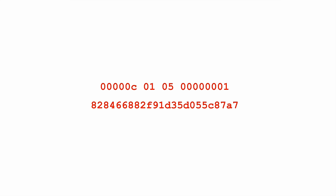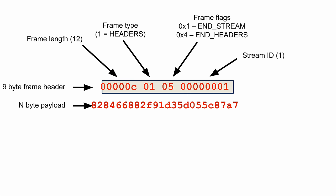Another way to look at that is where the fields are: there's a 9-byte header for every frame of HTTP2. There are 3 bytes saying the length of the frame, 1 byte saying what the frame type is — and we'll go over the 10 current frame types — 1 byte for flags for that frame, and then the stream ID, which you can think of as a unique request ID on that connection. And then you have the payload — in this case, 12 bytes.